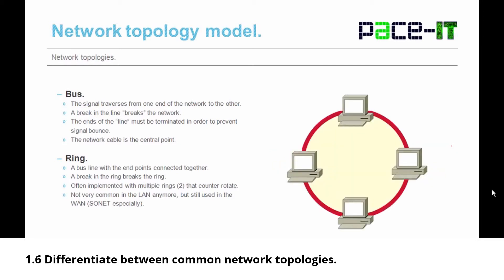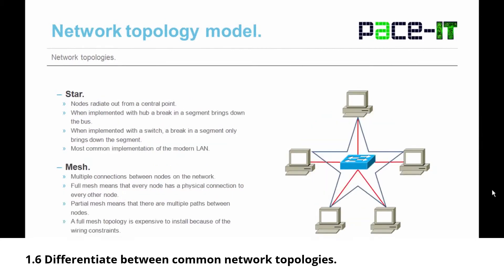Related to the bus is the ring — it's a bus line with the endpoints connected together. A break in the ring breaks the ring. In a ring topology, it's common to use two rings that counter-rotate, which safeguards against a break in one ring bringing down the whole network. Ring topologies are not very common in the LAN anymore, but they're still used in the WAN, especially when SONET or SDH is used.